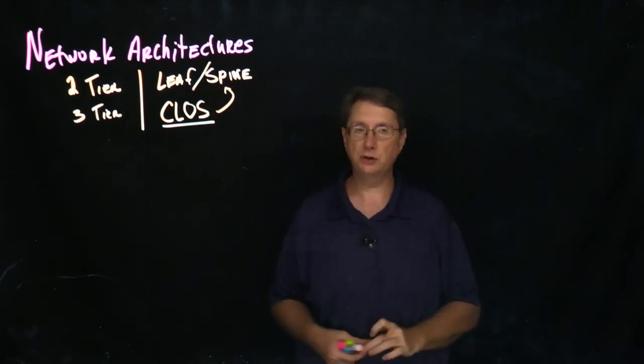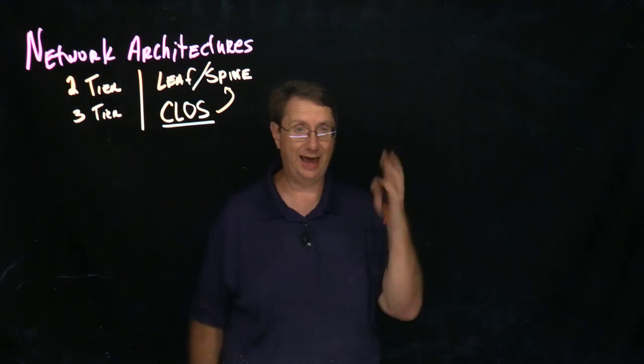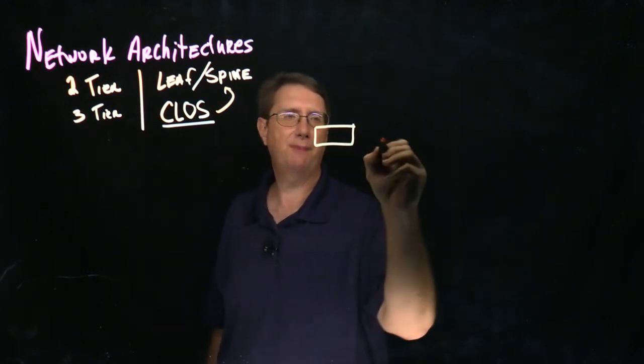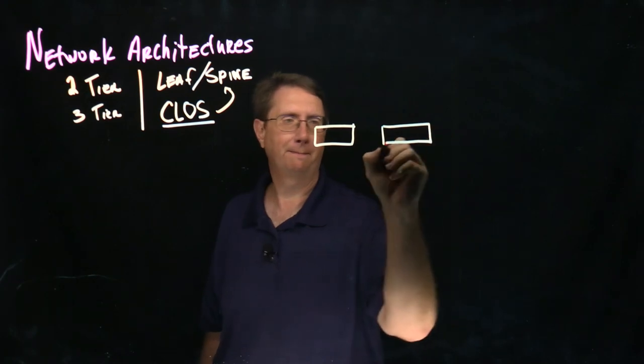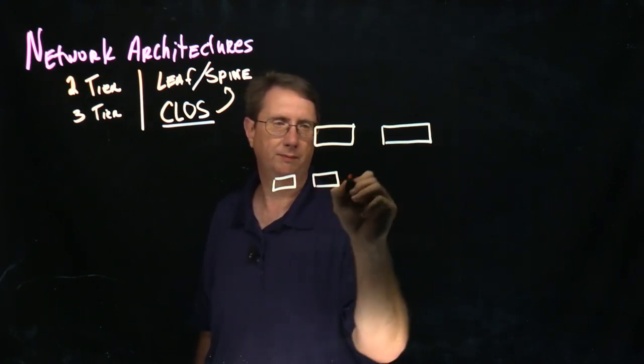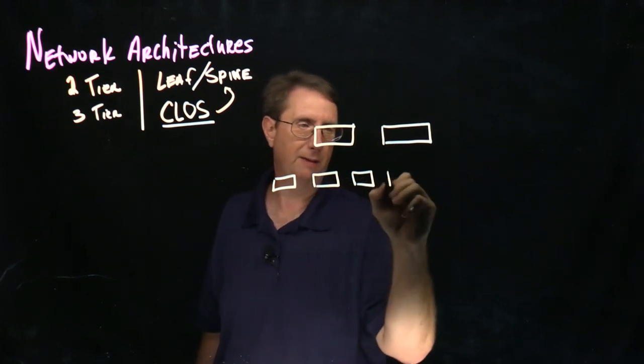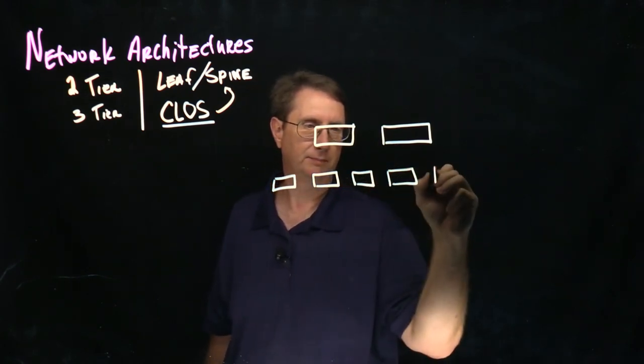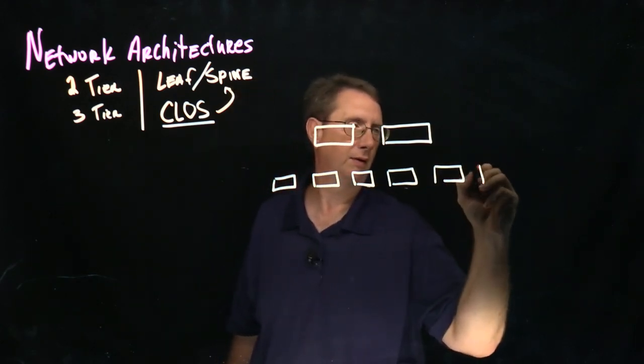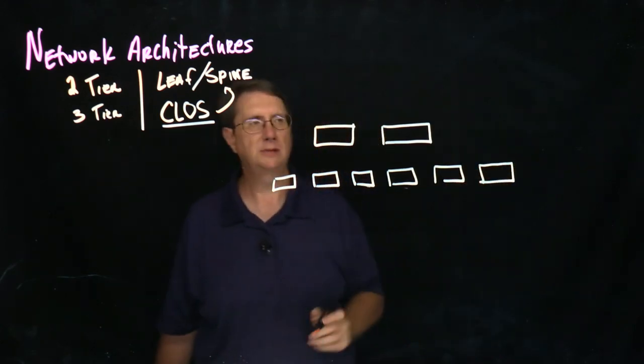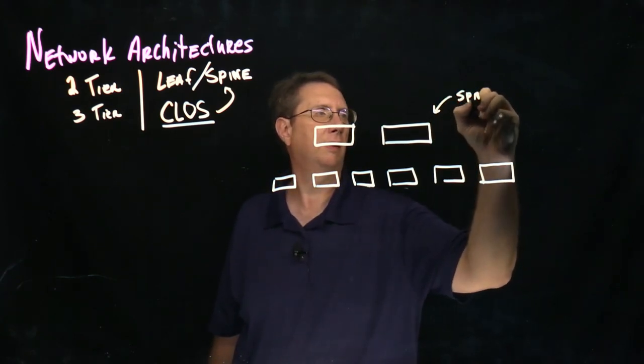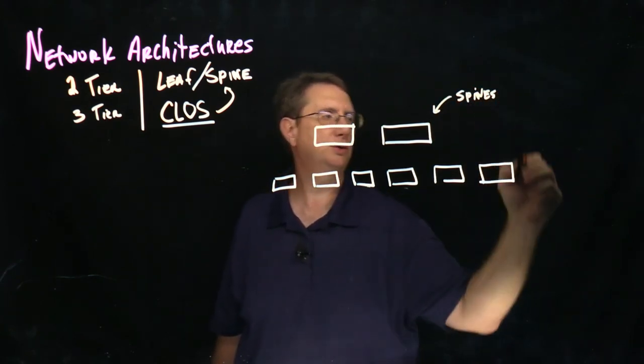So it should come as no surprise that we're talking about a design that has two layers. So if I were to draw a leaf spine design, this is what we're talking about. So these would be my spines, these would be my leaves.